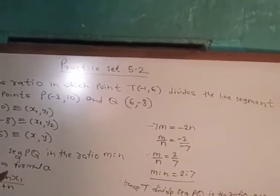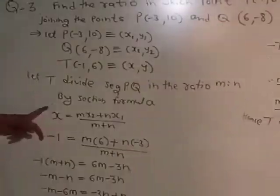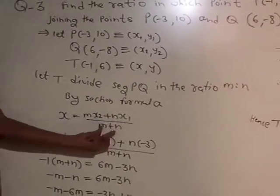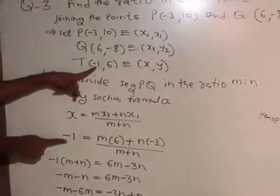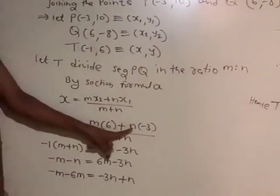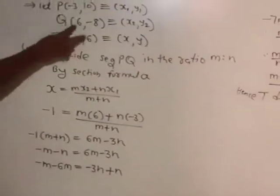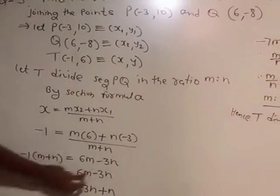We use section formula for one coordinate, x or y, because we have to find m/n. Therefore for x coordinate: x = (mx2 + nx1)/(m+n). The value of x is -1, so -1 = (6m - 3n)/(m+n).